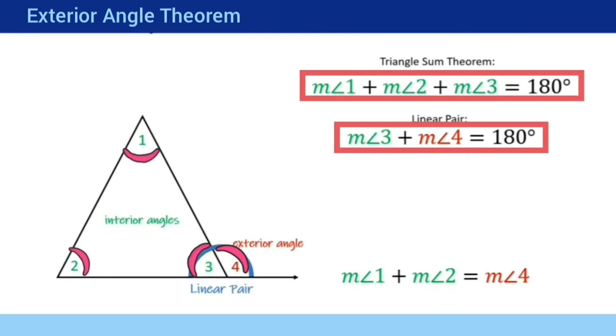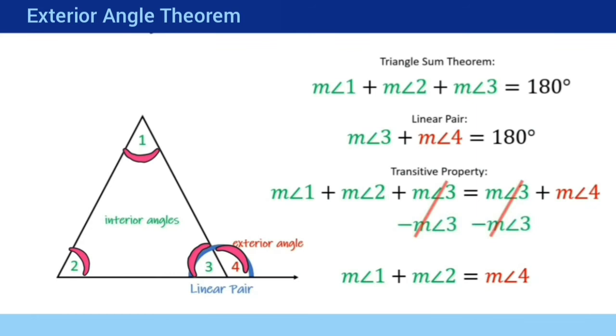Both these expressions equal 180 degrees. It means they have to be equal. We can say that angle 1 plus angle 2 plus angle 3 equals angle 3 plus angle 4. Subtracting the measure of angle 3 from both sides, we can say that angle 1 plus angle 2 equals angle 4.